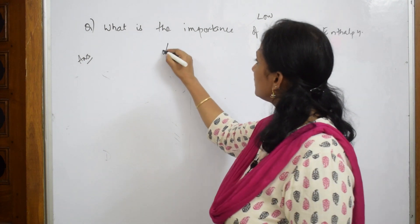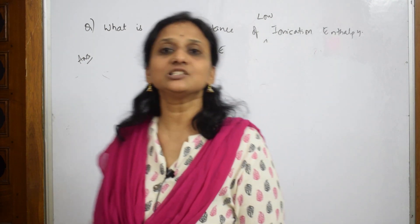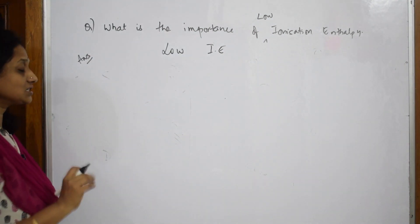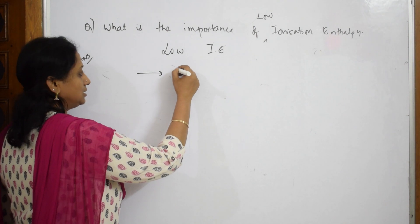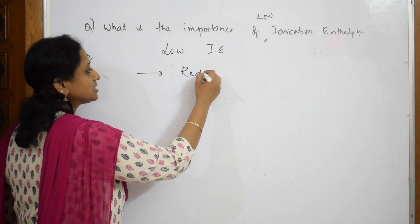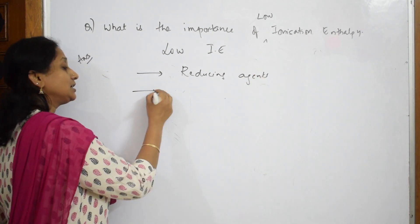Whichever element has low ionization enthalpy value, that means with less energy I can remove that electron. The important property those particular elements have is they act as good reducing agents.